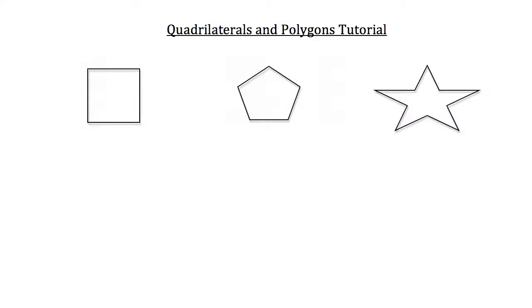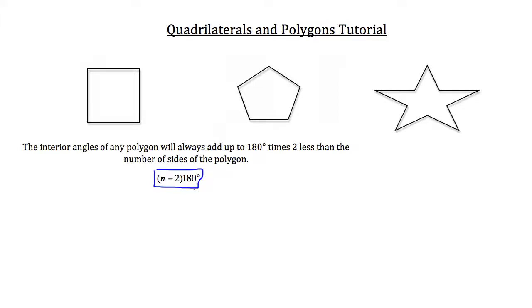Now there's something that you should know about the interior angles of any polygon. The interior angles of any polygon will always add up to 180 times 2 less than the number of sides of the polygon. So I've gone ahead and put that into a mathematical equation for you, where n is the number of sides to the polygon. And the sum of this is the sum of the interior angles.